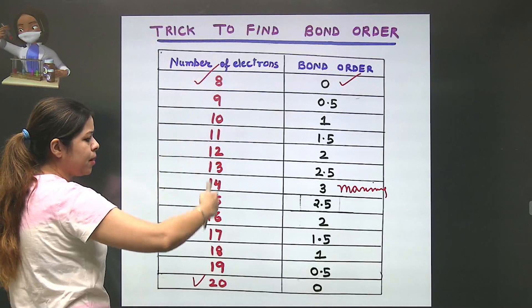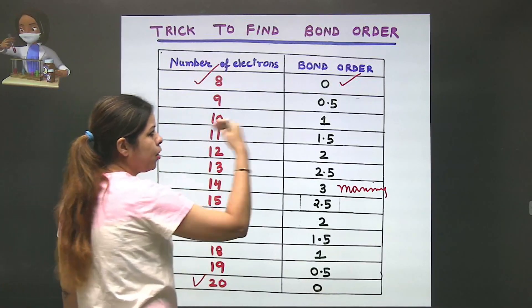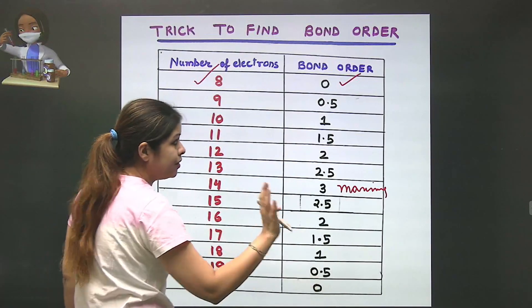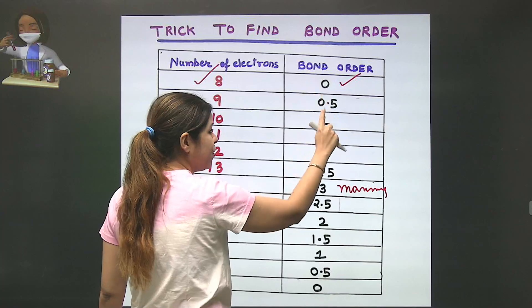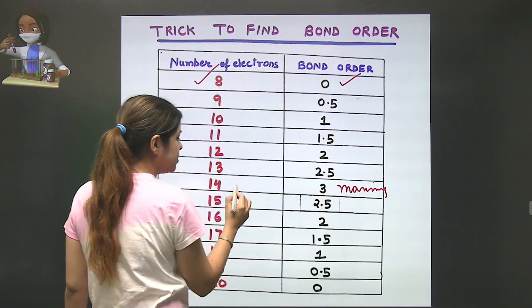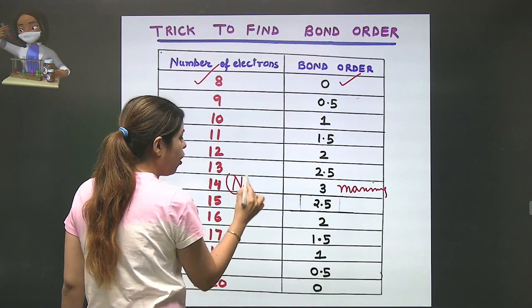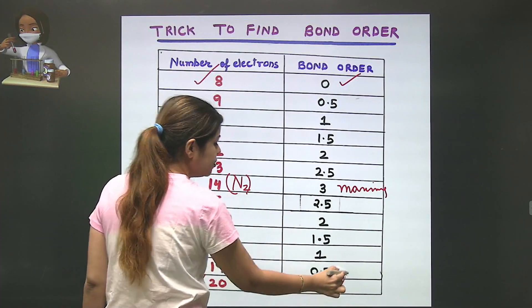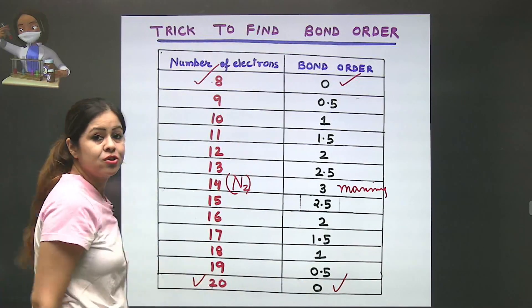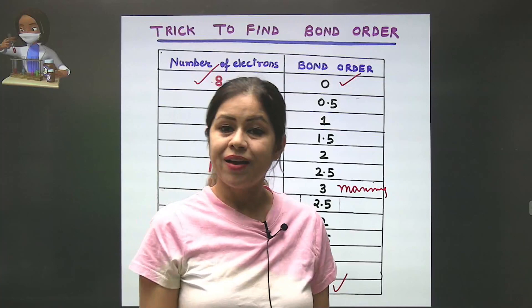This was a very short trick where we total the number of electrons and just keep this pattern in mind. We start from 0, then increase by 0.5 increments. There is a maximum of 3, which is for nitrogen, then it starts decreasing again. It goes from 8 to 20 electrons, starting from zero bond order. It was very simple.